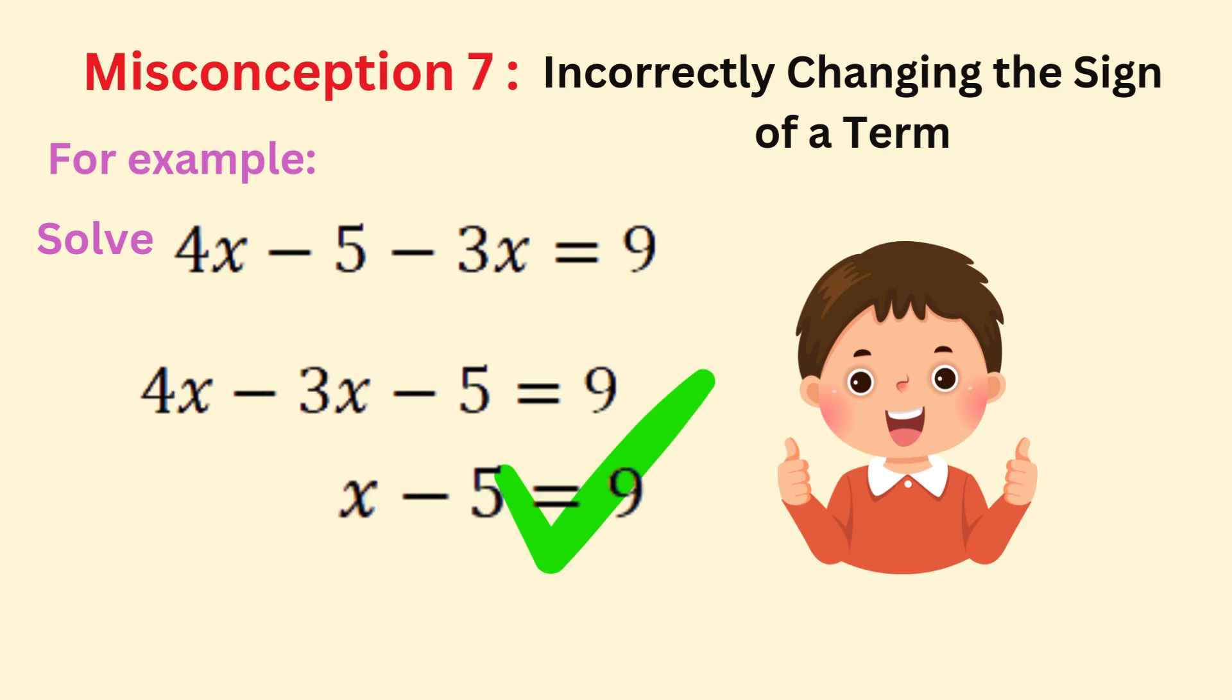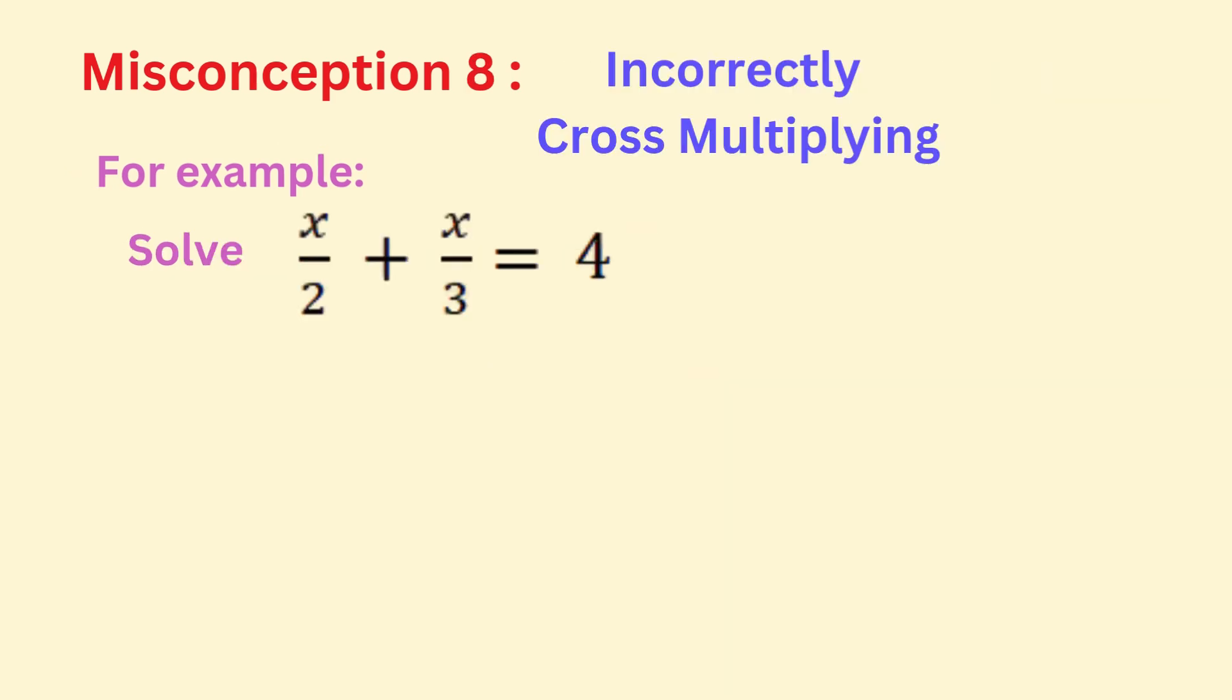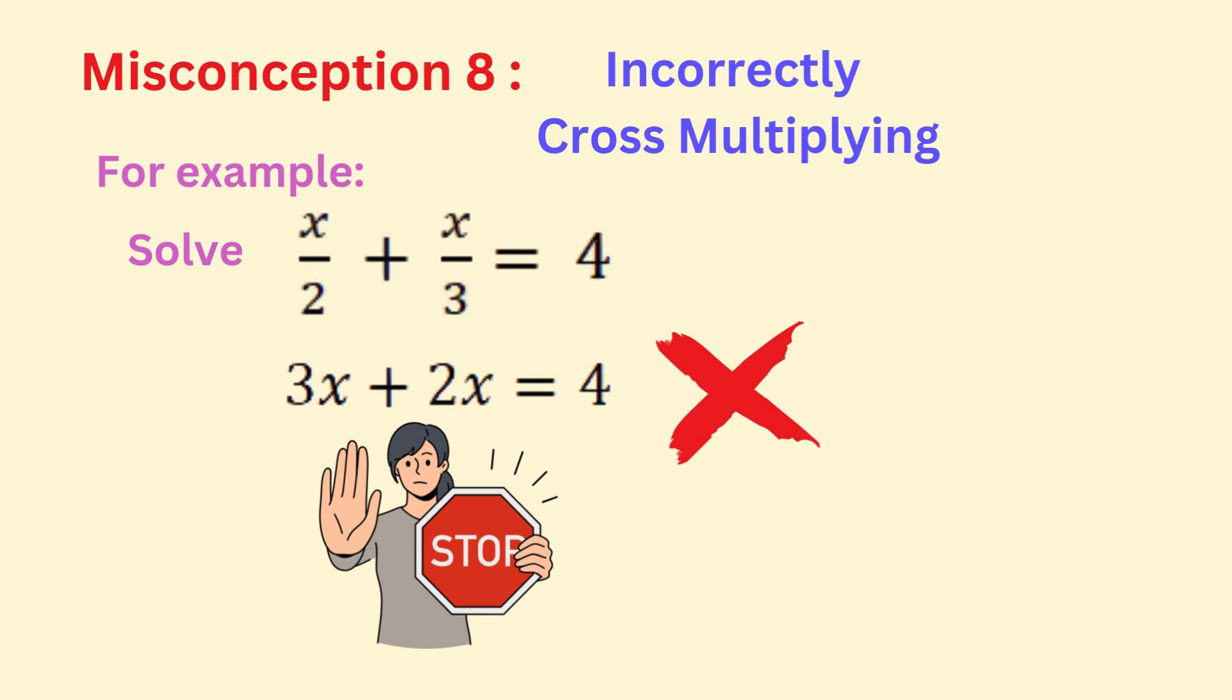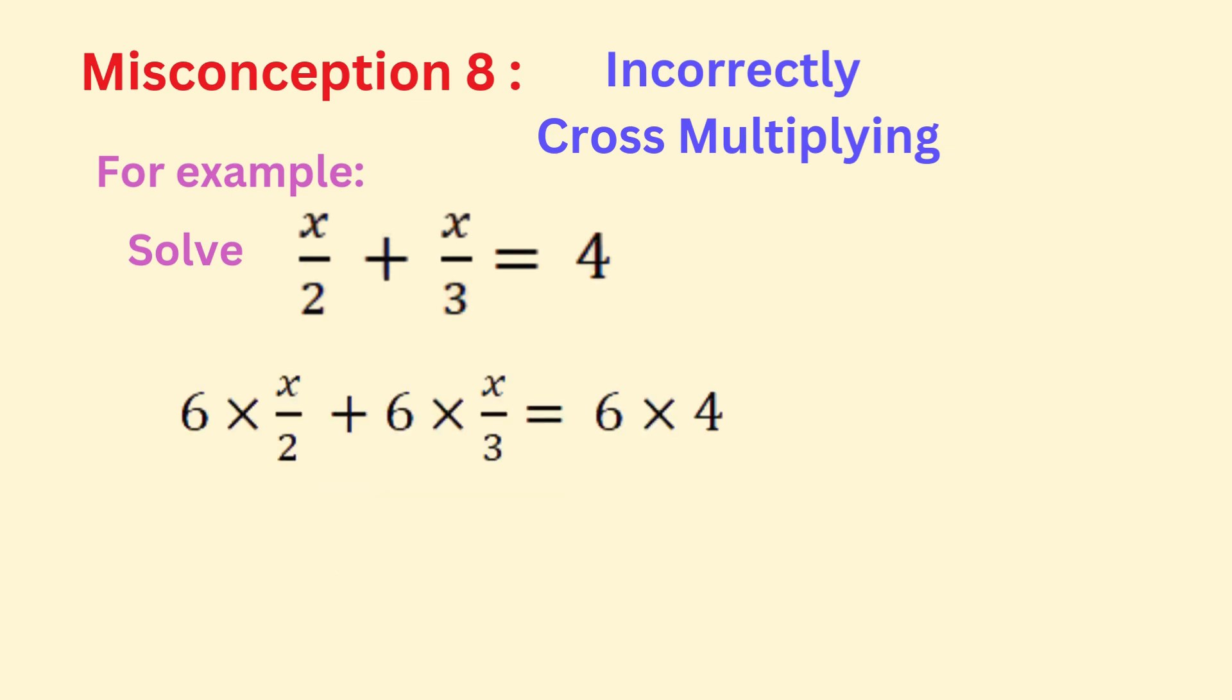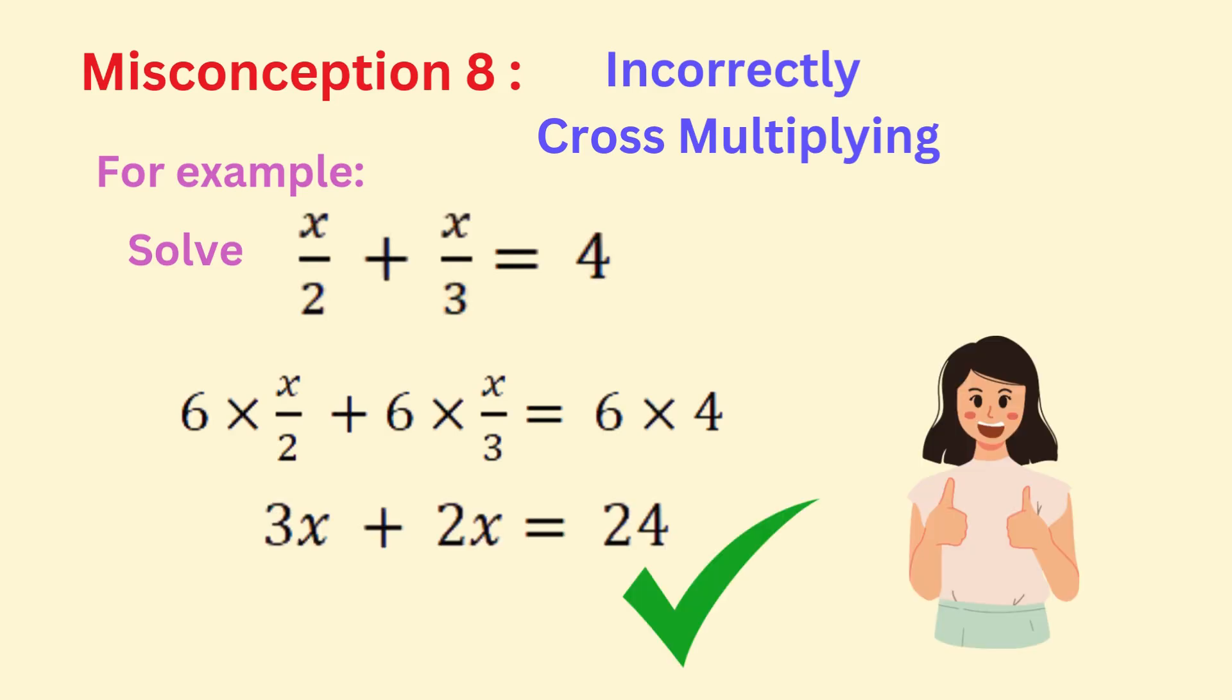Cross multiplying seems like an easy shortcut, but it doesn't apply to equations like this one. The correct approach is to multiply each term on both sides of the equation by the lowest common multiple. This avoids the confusion of cross multiplying, which leads to errors.